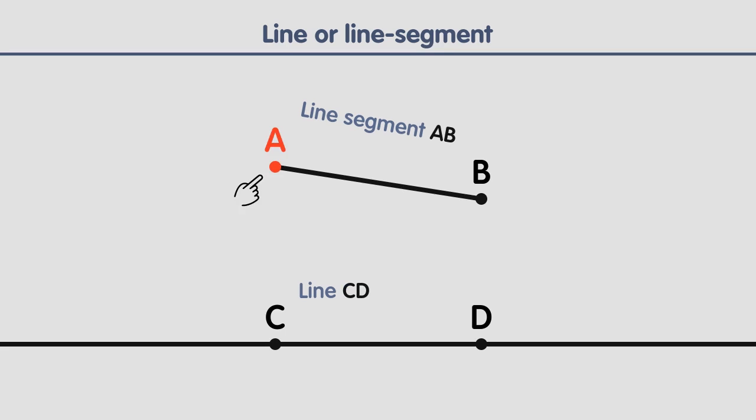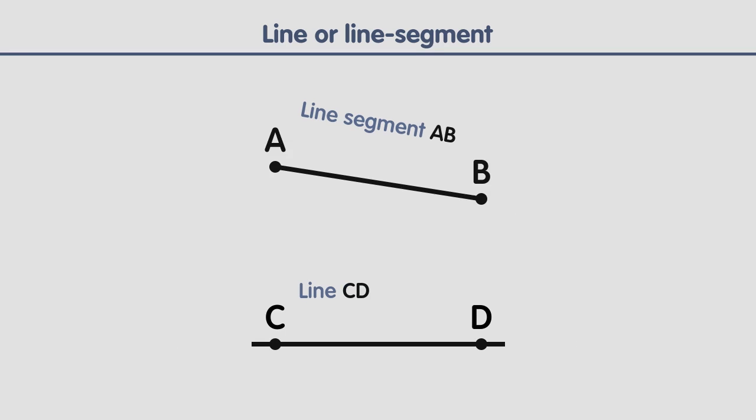A line segment starts at one point and ends at another, whereas a line doesn't — a line keeps on going forever in both directions. But since we can't actually draw a line that goes on forever, what we do is draw an arrowhead on both ends of the line to show that it keeps on going.